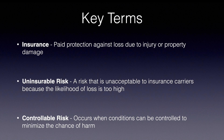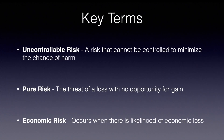An uninsurable risk is a risk that is unacceptable to insurance carriers because the likelihood of loss is too high. A controllable risk occurs when conditions can be controlled to minimize the chance of harm. An uncontrollable risk is a risk that cannot be controlled to minimize the chance of harm. A pure risk is the threat of a loss with no opportunity for gain. An economic risk occurs when there is likelihood of economic loss.